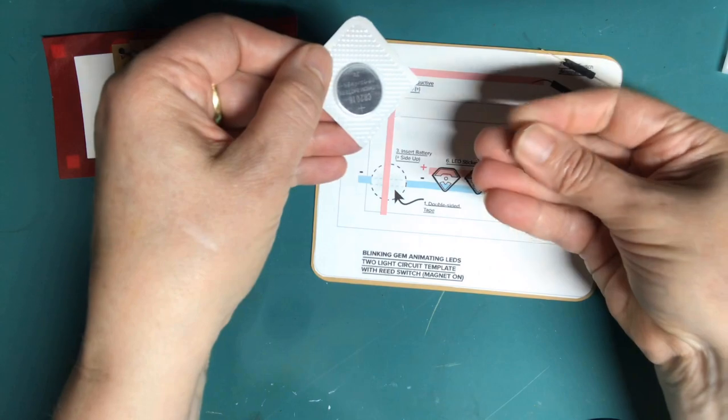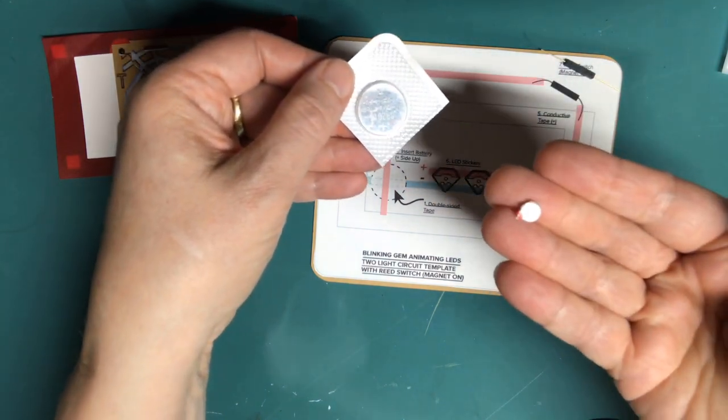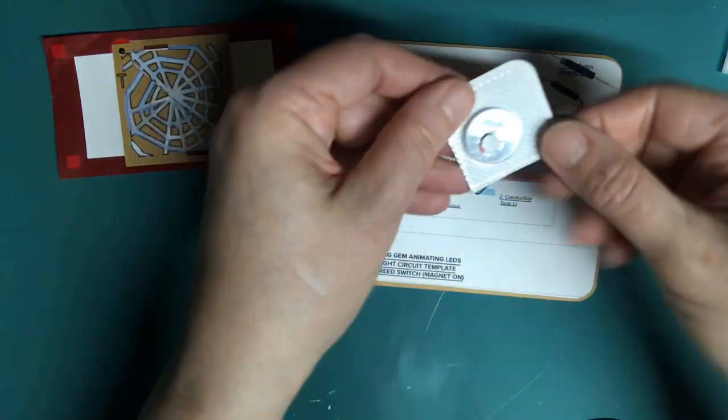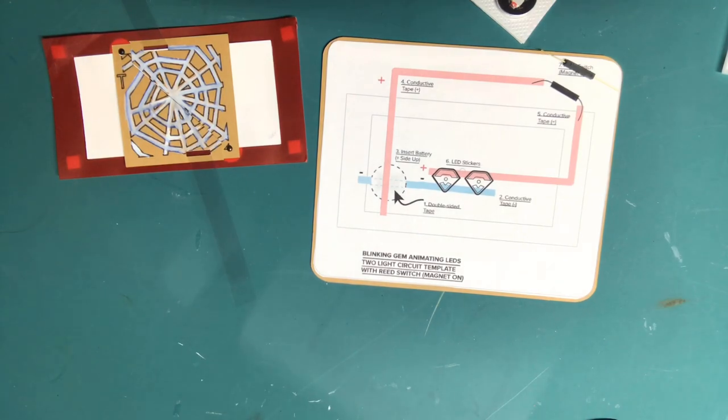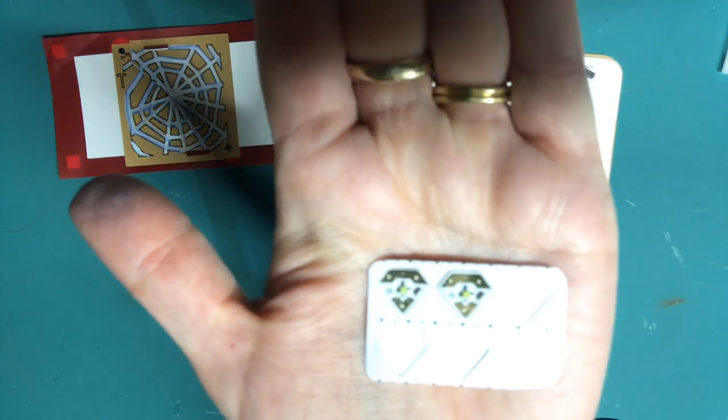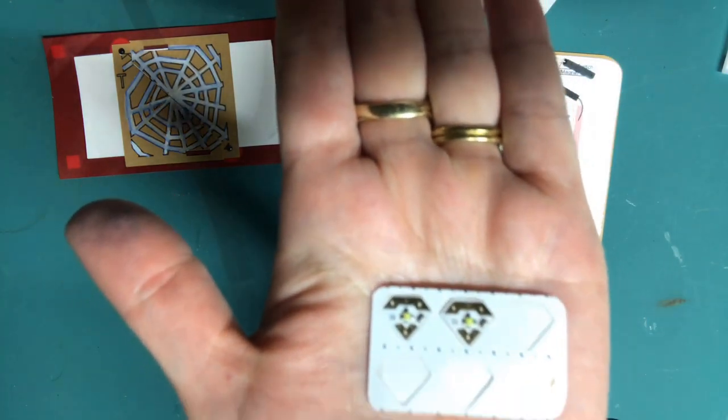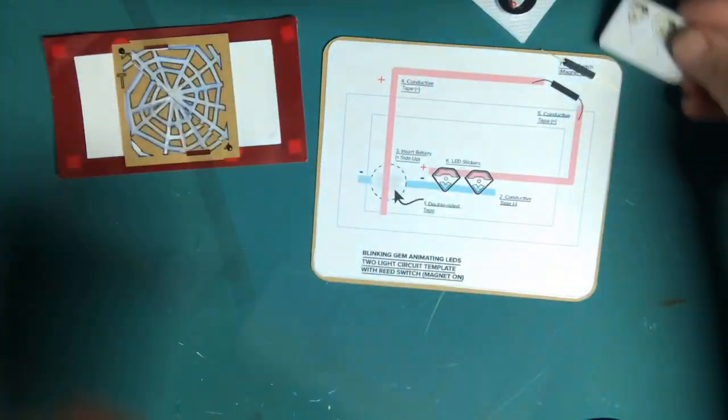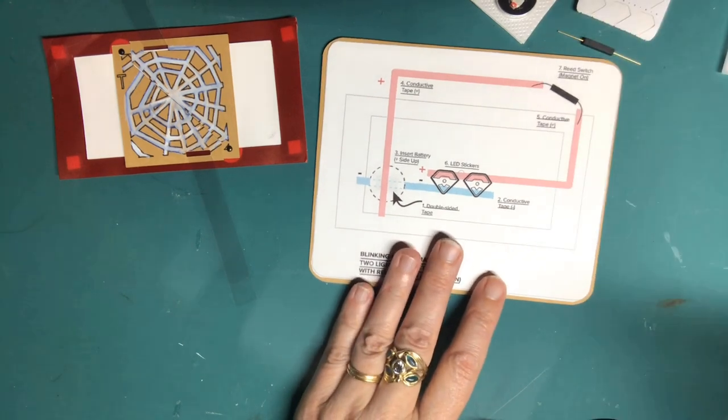To build the circuit you'll need a reed switch, a coin cell battery, and a magnet. The one I'm using has an adhesive backing, but glue or double-sided tape can work in a pinch. You'll also need conductive fabric tape and two circuit sticker LEDs. I'm using two blinking gem animating LED stickers.